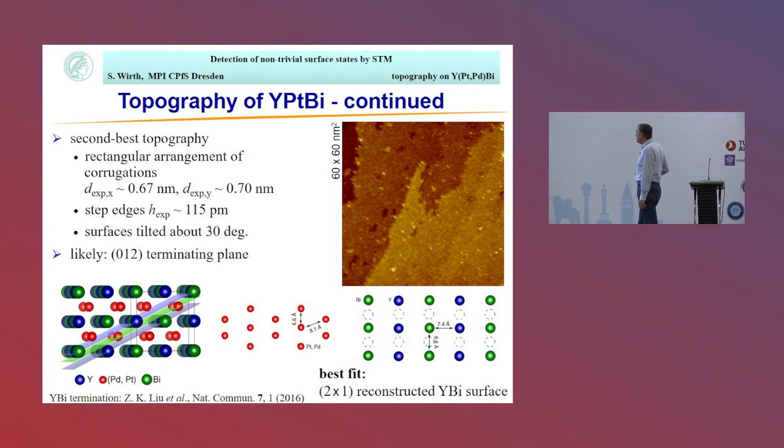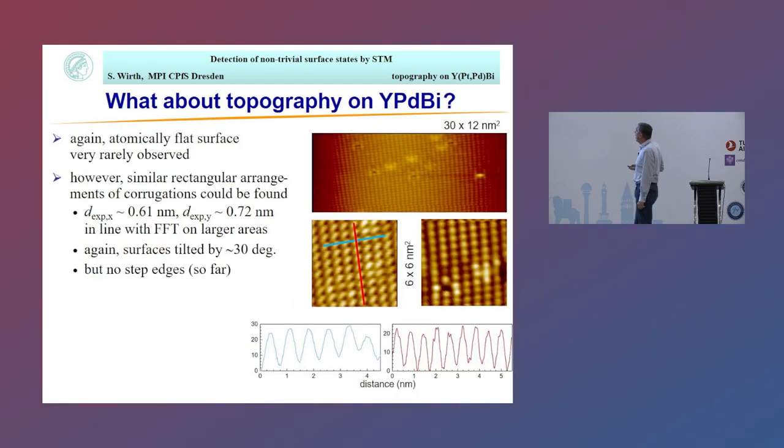But we seem to have a 2x1 reconstructed surface. Just for comparison now, for the palladium, in this case we were lucky. We also found atomically flat surfaces as shown here. Similar distances between the corrugations, and again this tilt of about 30 degrees. So far we haven't seen any step edges, so this part of the comparison is missing, but still I think we do have sufficient evidence that this is a 012 surface, and again with the 2x1 reconstruction.